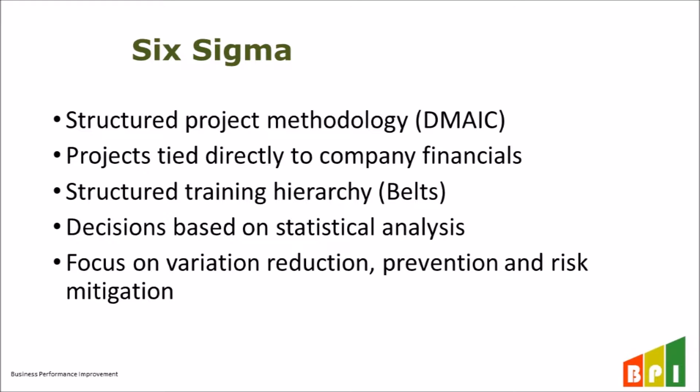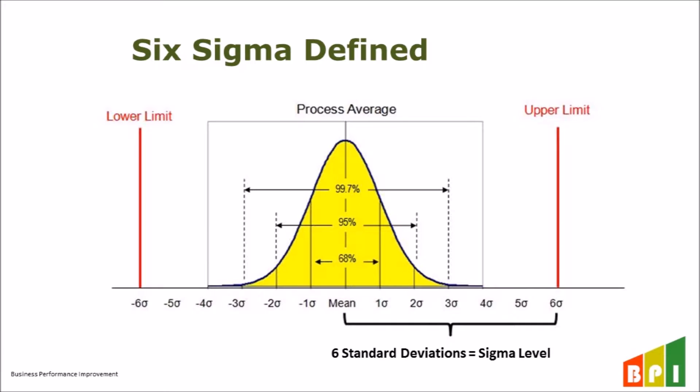The term Six Sigma has a statistical meaning. If you assume that your business process operates like a normal distribution, or bell-shaped curve, then certain assumptions can be made. The process performs within about three standard deviations from the process average. If we define the quality of the process using upper and lower specification limits, then a Six Sigma process is one where the nearest specification limit is at least six standard deviations away from the average.